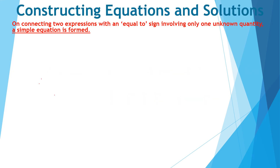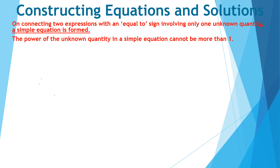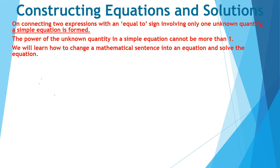On connecting two algebraic expressions with an equal to sign involving only one unknown quantity, a simple equation is formed. The power of the unknown quantity in a simple equation cannot be more than one. We will learn how to change a mathematical sentence into an equation and solve the equation.